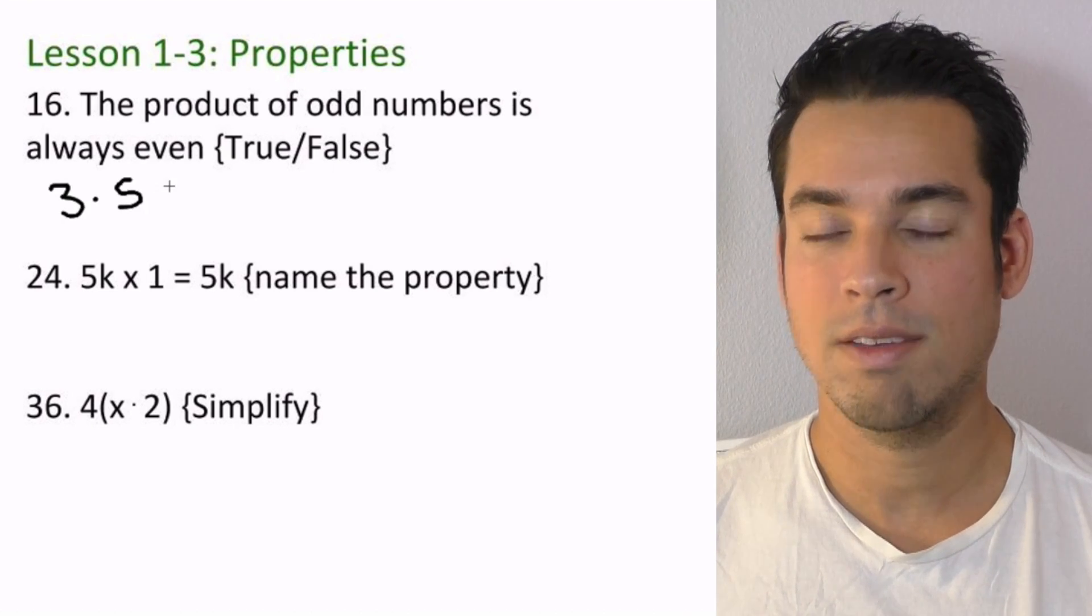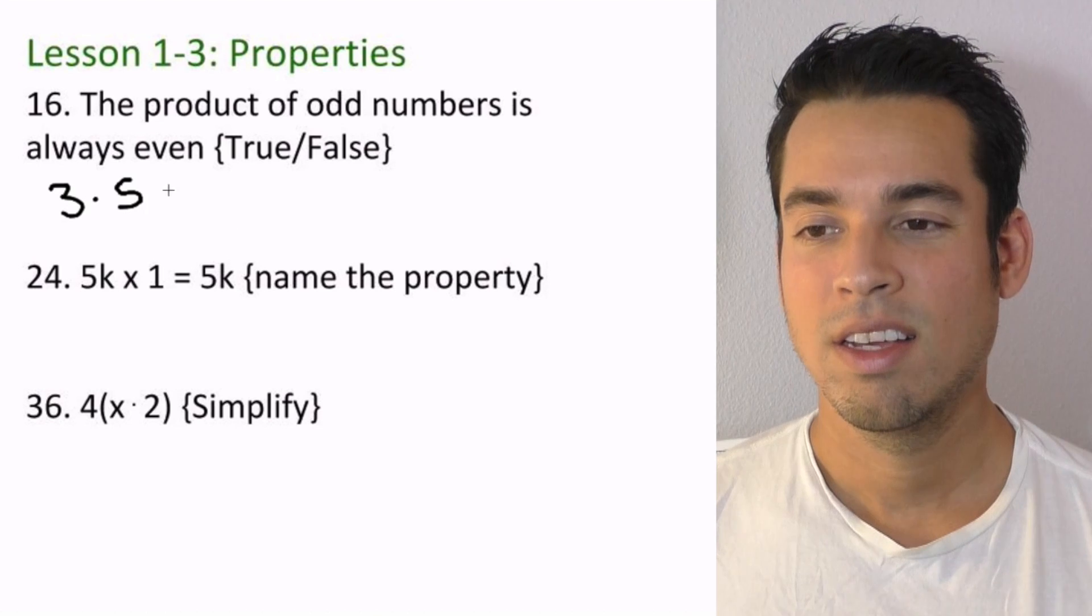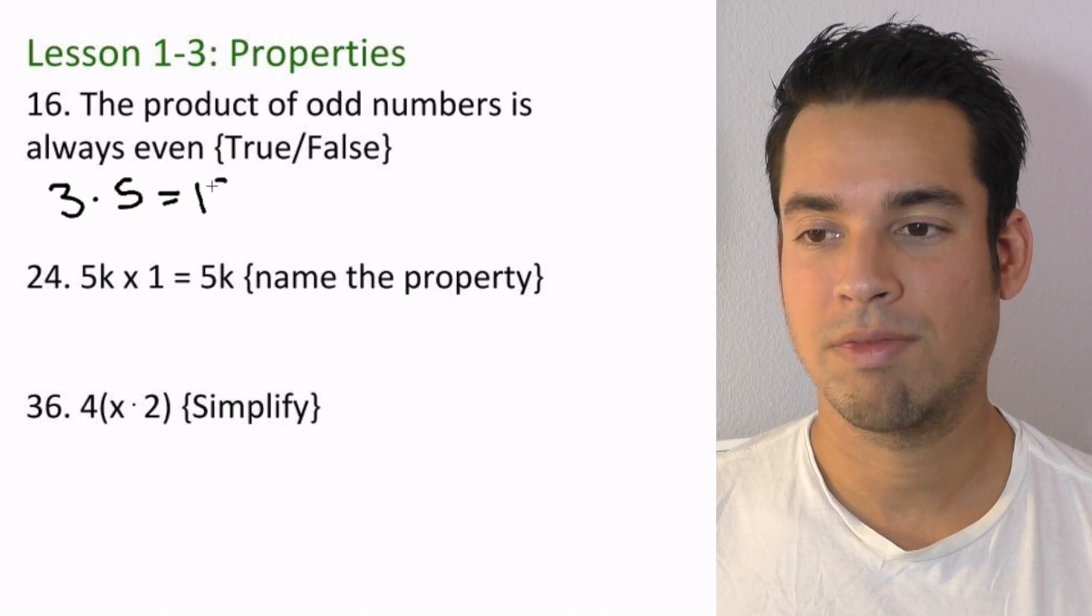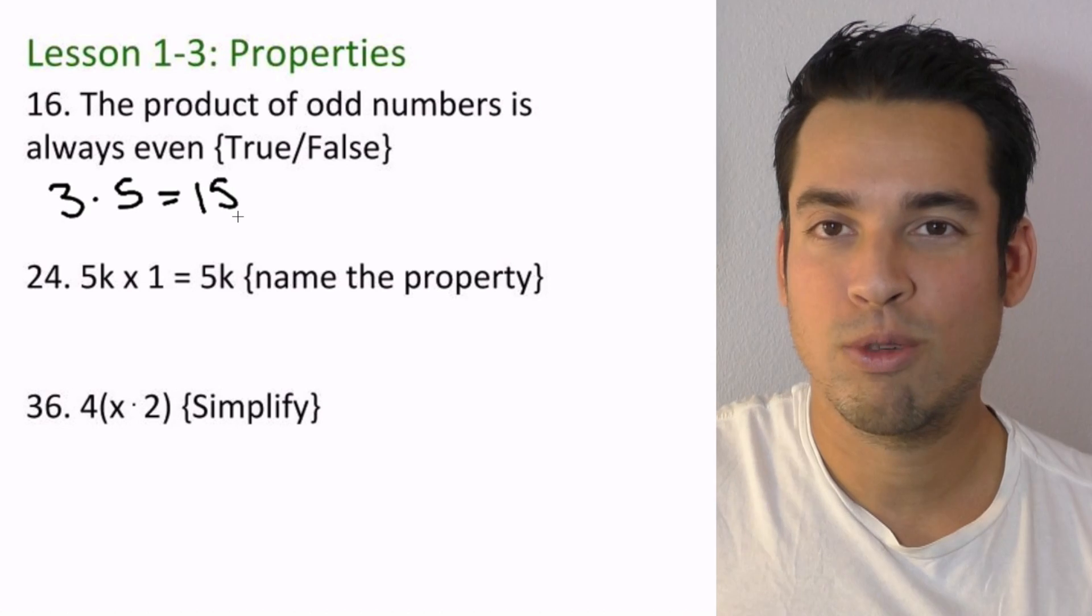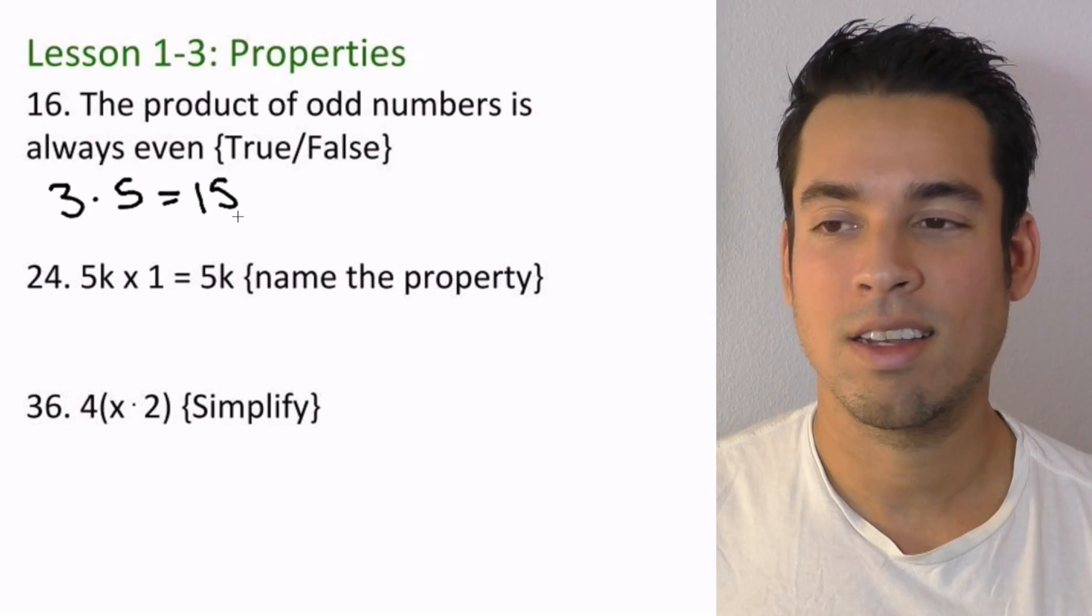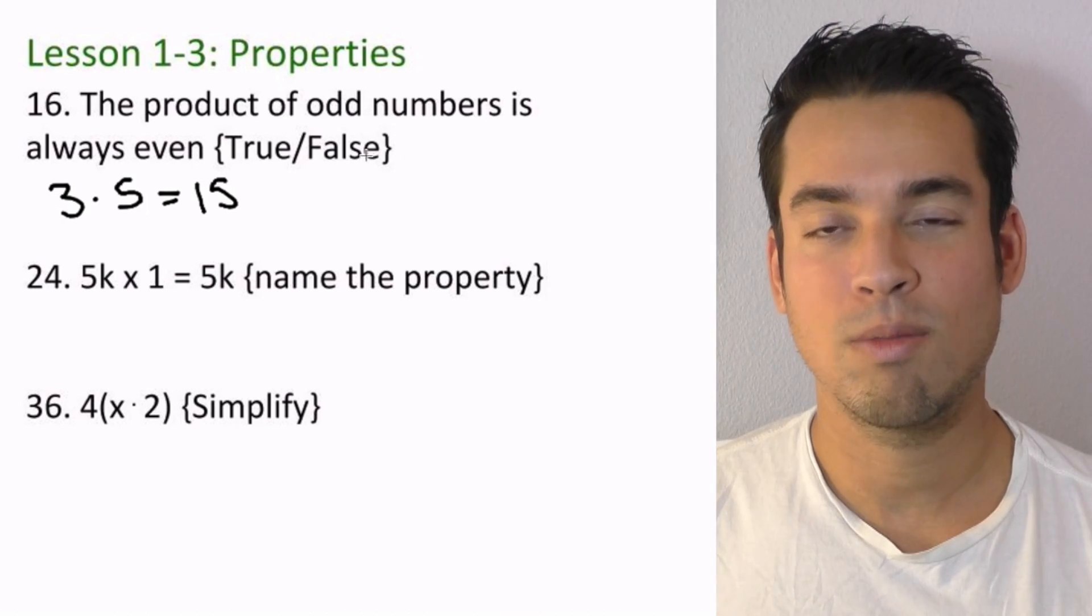Let's try 3 times 5, both odd. 3 times 5 is 15. So that means the product of these two odd numbers that we just randomly tried is odd. Well, that means the product of odd numbers can't always be even, so this statement is therefore false. Done.